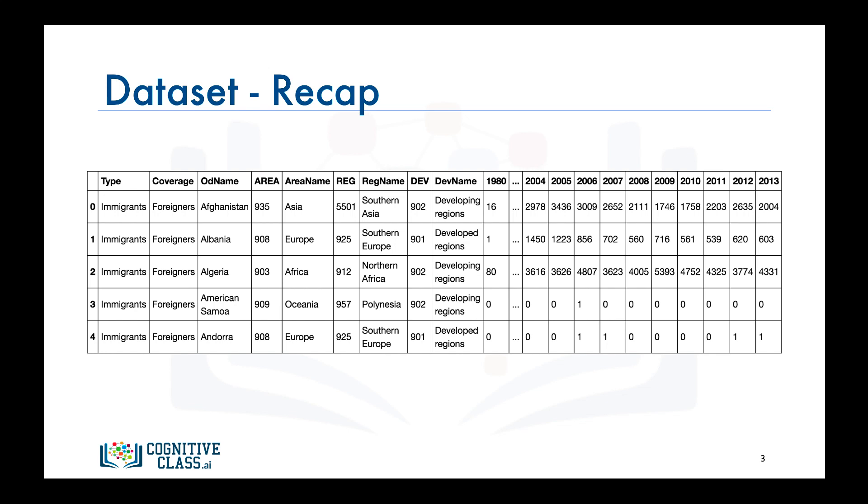let's do a quick recap of our dataset. Recall that each row represents a country and contains metadata about the country such as where it is located geographically and whether it is developing or developed. Each row also contains numerical figures of annual immigration from that country to Canada from 1980 to 2013.